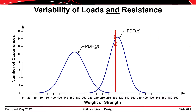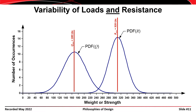On average, students weigh about 180 pounds and ropes have a strength of 320 pounds — so on average, the strength is about 140 pounds greater than the applied load and everybody should be fine. However, it is possible for the heaviest student to select the rope with the least strength, resulting in a load greater than the resistance. The overlap of the two curves, highlighted in red, represents the possibility of failure — a statistically small but nonzero chance that the heaviest person grabs the weakest rope.